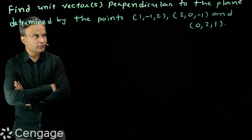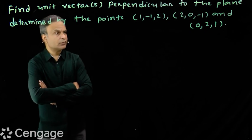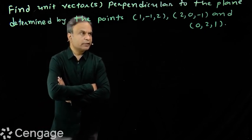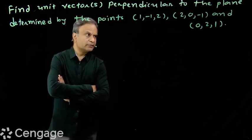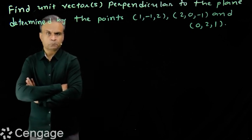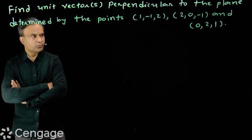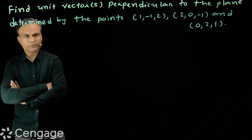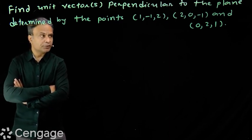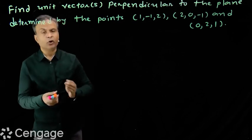We have here three points having coordinates (1,-1,2), (2,0,-1), and (0,2,1). These three points are non-collinear points. We can verify three non-collinear points will form a plane in the space.